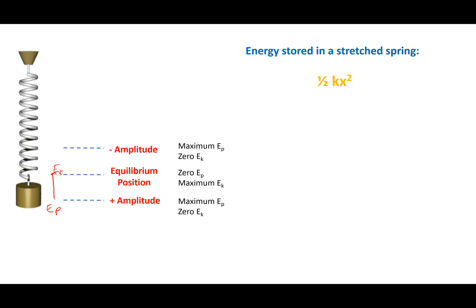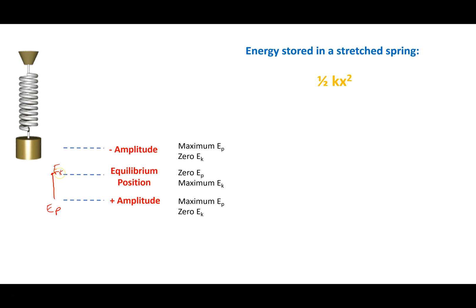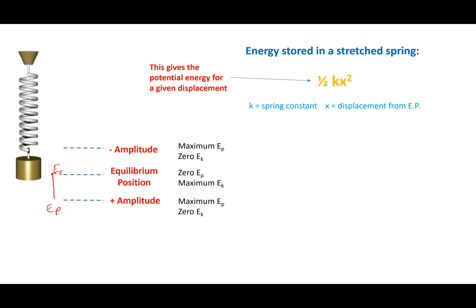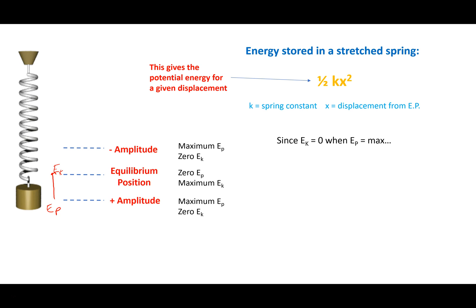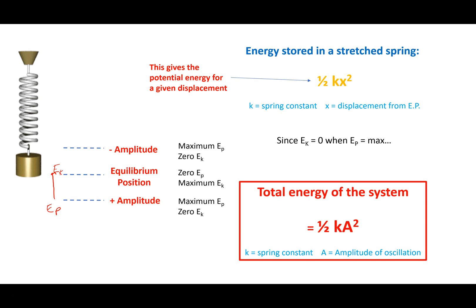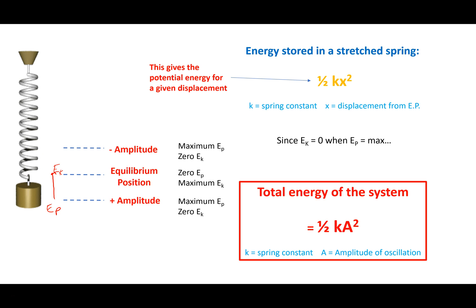The energy stored in a stretched spring is equal to one half kx squared, where k is the spring constant of the system and x is the extension from the equilibrium point. We can know that since the kinetic energy is going to be zero when the potential energy is its maximum, the total energy of the system equals the maximum potential energy. That is, the total energy at any point in this system will be equal to one half times the spring constant times the amplitude of oscillation squared.